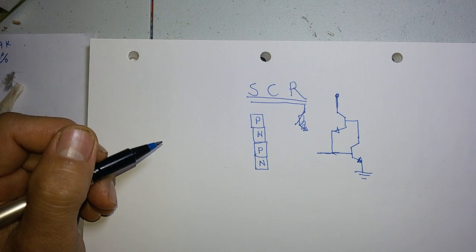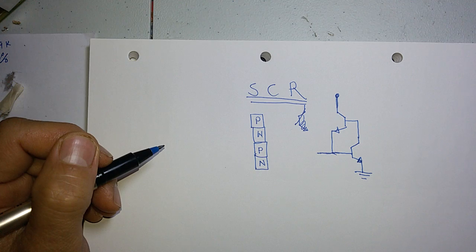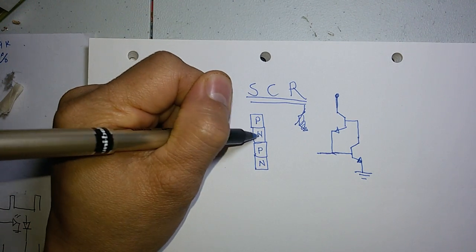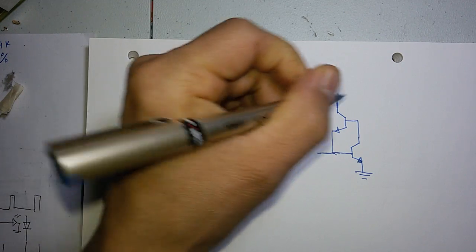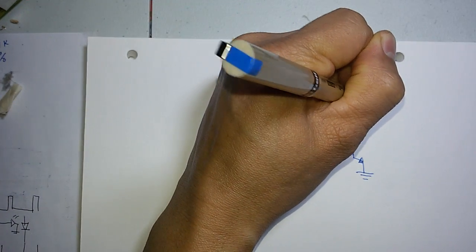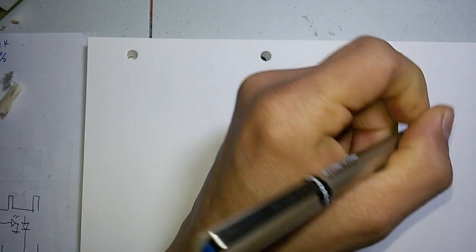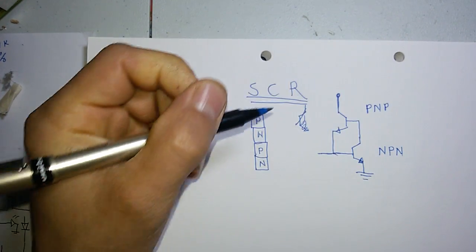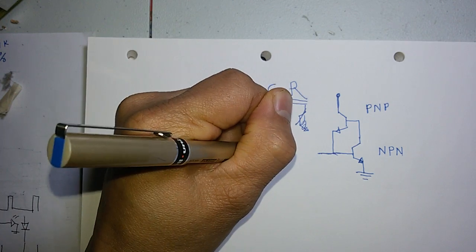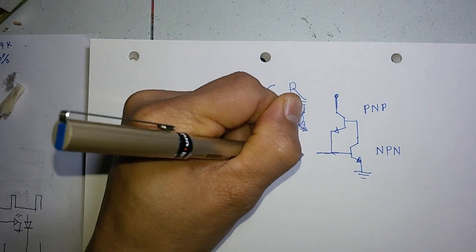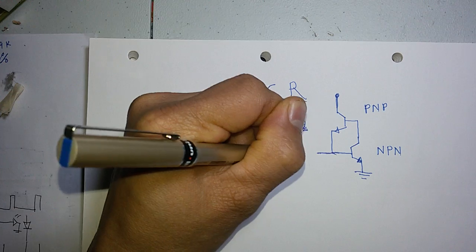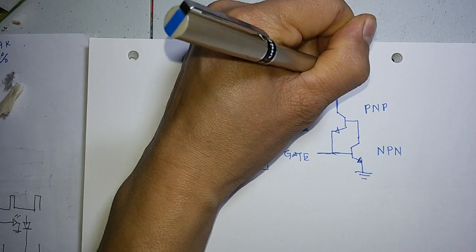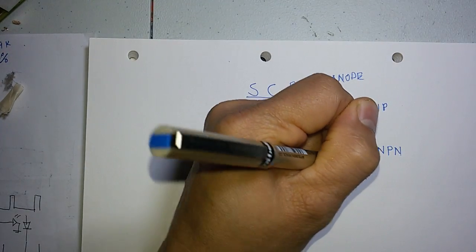SCR is normally composed of stacked transistors, so it is composed of PNP and NPN transistor. This is the PNP transistor and this is the NPN transistor. So now this is the gate of the SCR. This is the anode and this is your cathode.